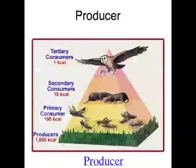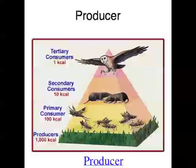The first link in a food chain is always something called a producer. Producers are autotrophs, which means that they make their own food. More often than not, they make their own food via the process of photosynthesis, so more often than not, producers are plants.